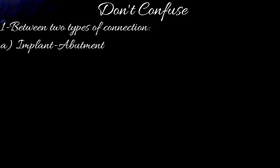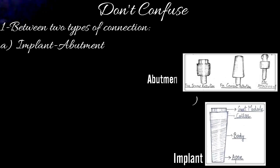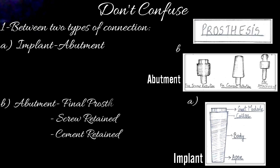Before starting with the topic, I would like to put forward two points to avoid any confusion. First, do not confuse between the two types of connections: the implant-abutment connection, which is between the implant and the abutment, and the other connection, which is between the abutment and the final prosthesis, as you can see in this picture. What we are going to discuss is the connection between the abutment and the prosthesis, which can either be screw retained or cement retained.